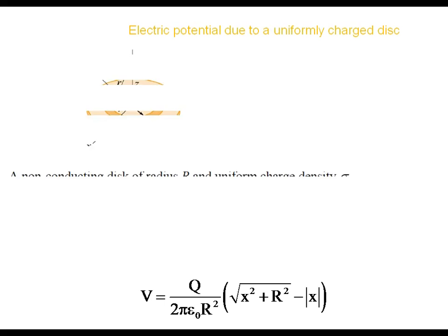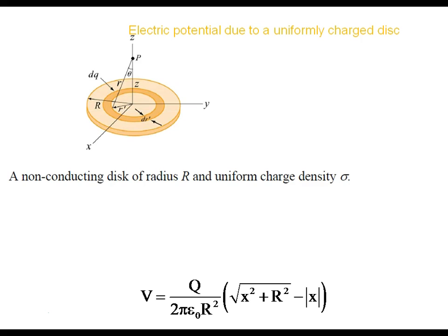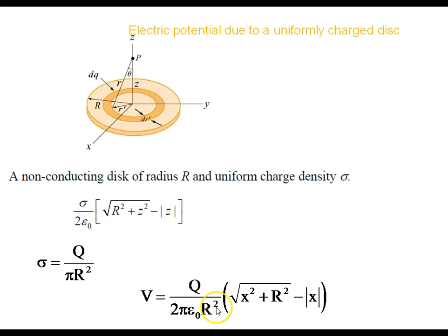This is the expression we have discussed. There are two formulas: one in terms of sigma, another in terms of Q. Either formula can be utilized. You can also use this potential expression to calculate the electric field using E equals minus dV by dx — please solve it yourself.